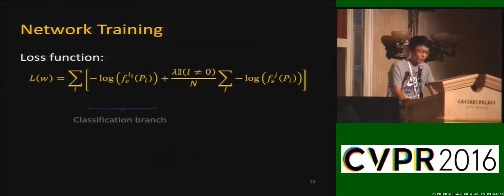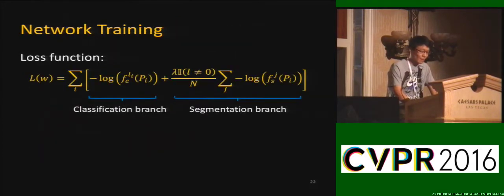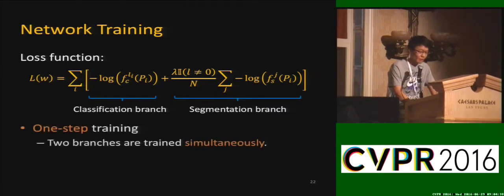During training, we combine classification and segmentation branches. Different from Fast R-CNN, which has four steps to train a two-branch network, we train the two branches simultaneously.